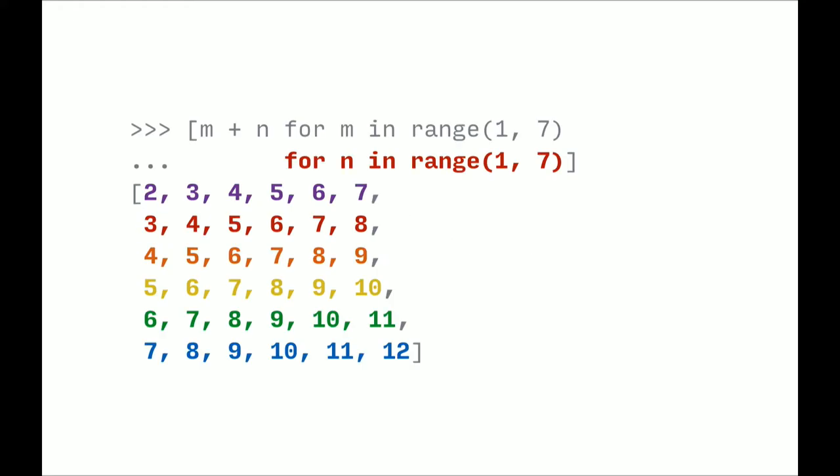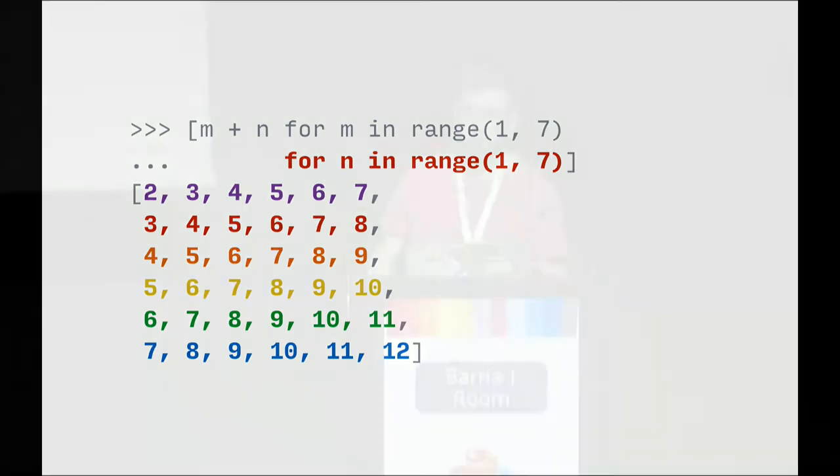And finally, with list comprehensions, we can have multiple for loops, which are nested. And so here we can see on the top line there, two, three, four, five, six, seven. That's one plus one, one plus two, one plus three, and so on. And the second line is two plus one, two plus two, two plus three. And so these are all the permutations of two dice rolls.